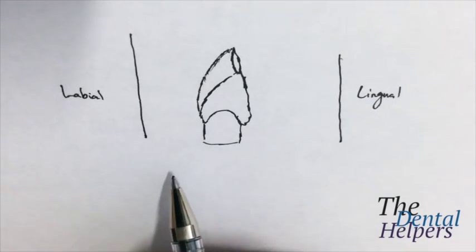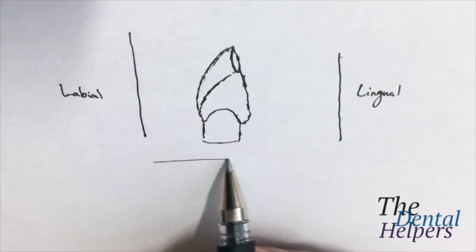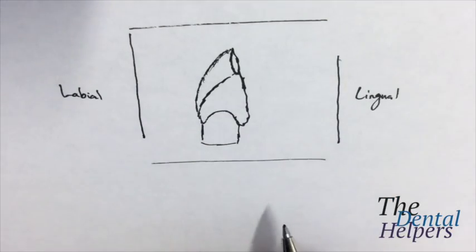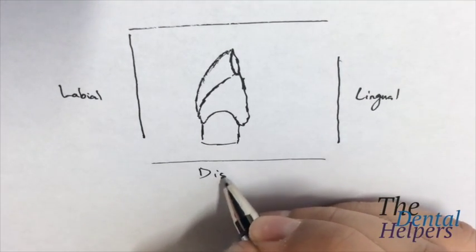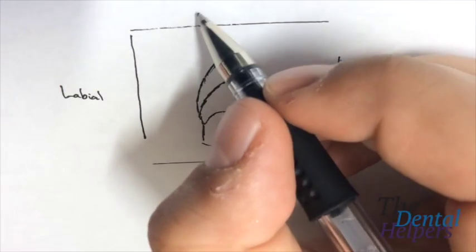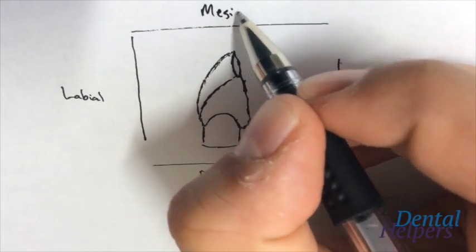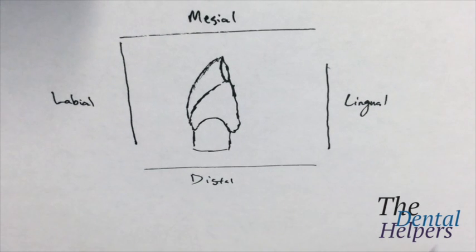The other thing we should know is the other side of the tooth. So this side, we're going to call it the distal side. And this side is the mesial. And the way you distinguish mesial from distal is mesial is the midline. Distal is anything away from the midline.